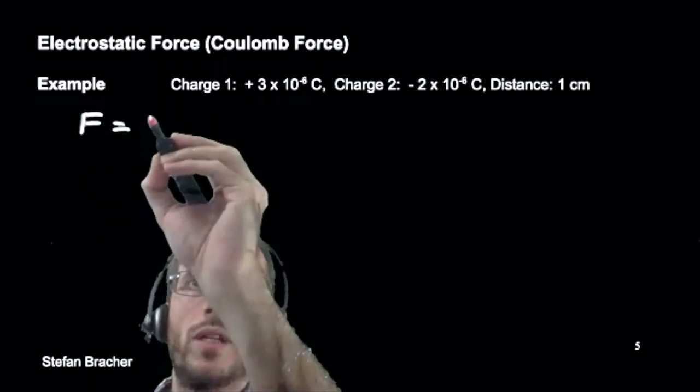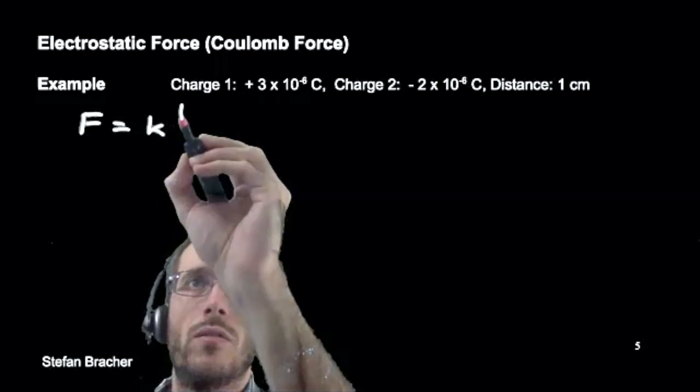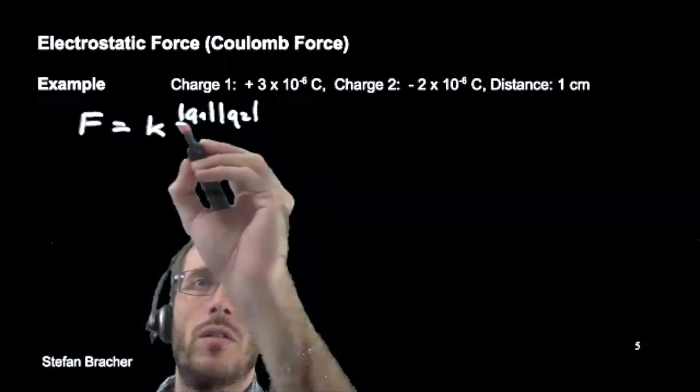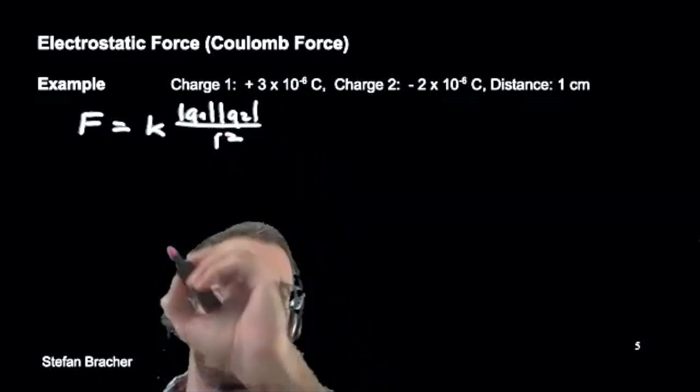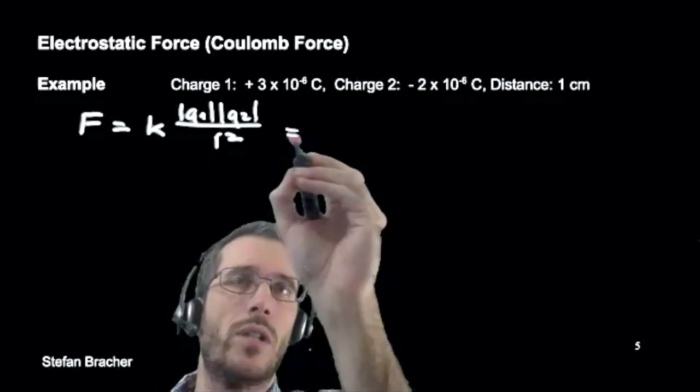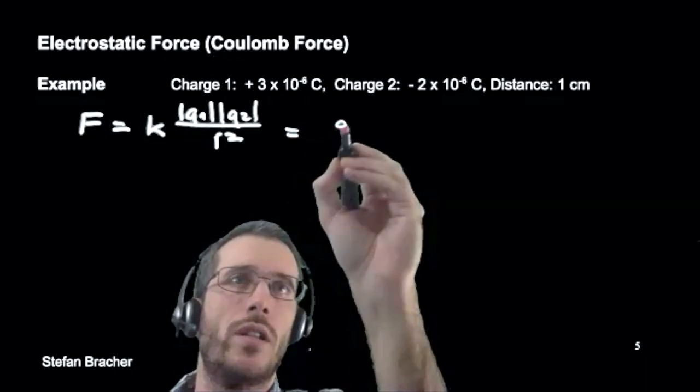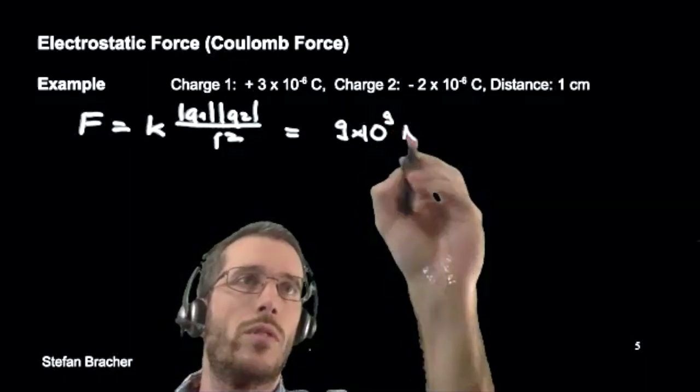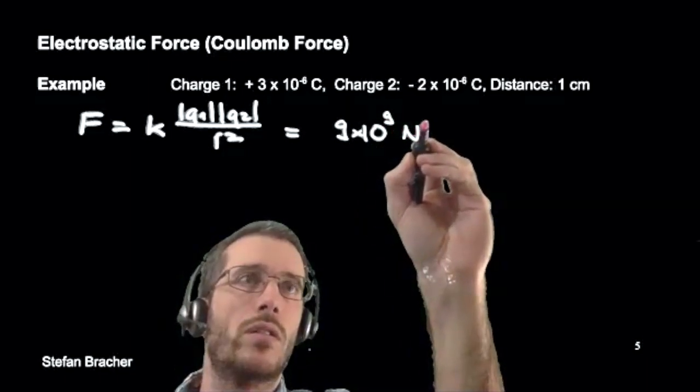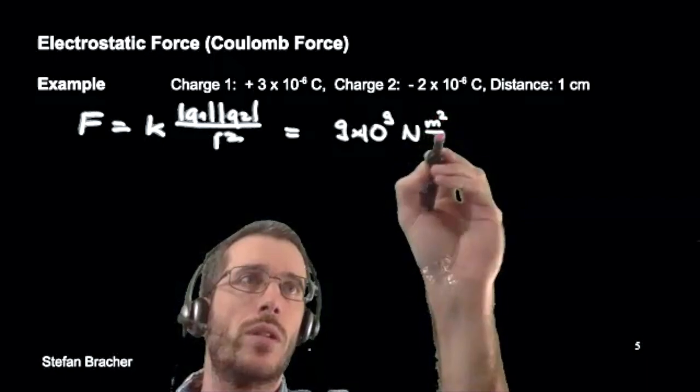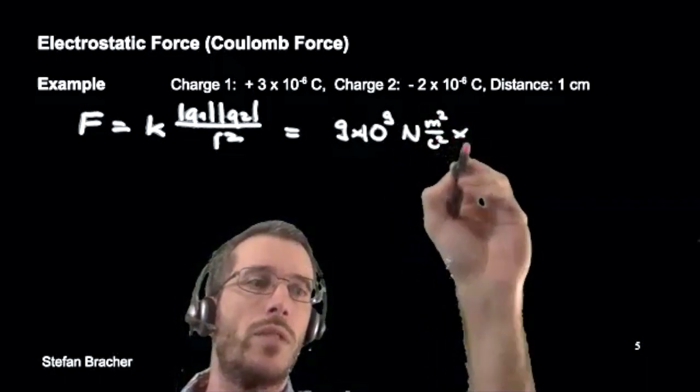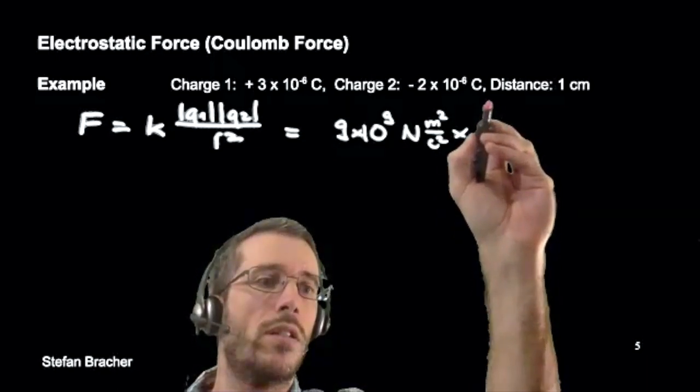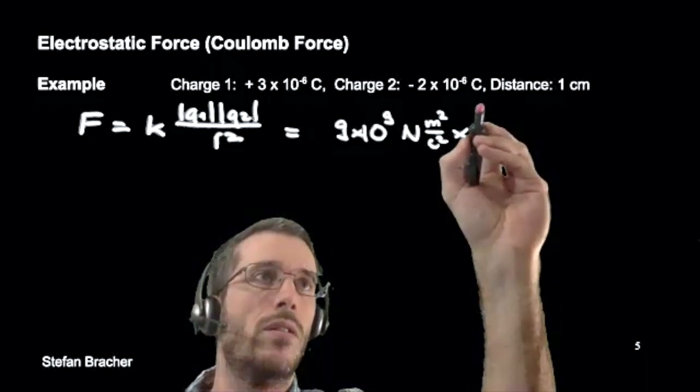So in this example, I have 9 times 10 to the 9 Newton square meter per Coulomb squared times my charge 1 is 3 times 10 to the minus 6 Coulomb times my second charge which is 2 but we have the magnitude so minus 2 becomes 2 times 10 to the minus 6 Coulomb.